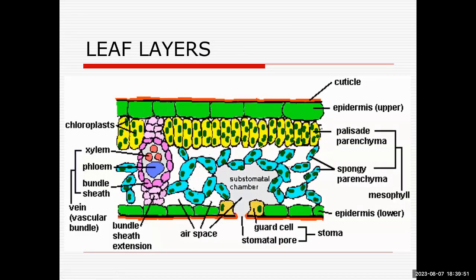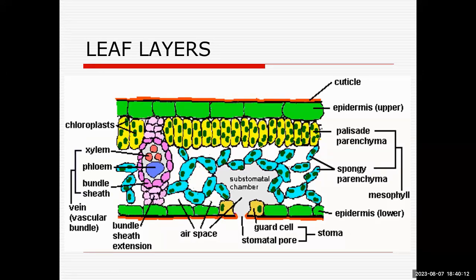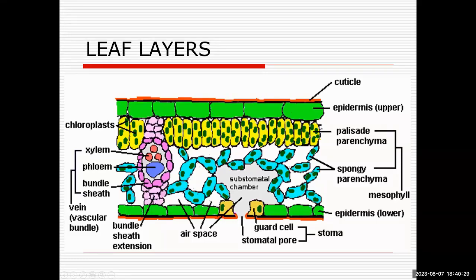If we take a cross section through a leaf, we see different layers going from top to bottom. At the very top is a waxy layer called the cuticle, whose purpose is to protect the leaf from drying out from wind and sun. Depending on how thick and waxy it is, the cuticle can also protect against insects. Underneath that is one layer of cells — although it appears green here, this is a clear layer of cells with no chlorophyll. That is the upper epidermis, or the skin of the leaf.